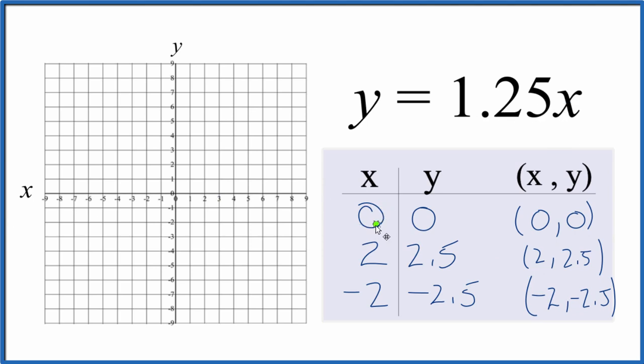So we have 0, 0. That's right here at the origin. We have 2, 2.5. So we go over 2 and up 2.5. And then we have negative 2 for x and negative 2.5 for y.